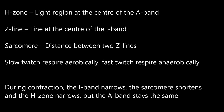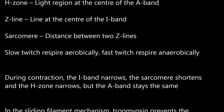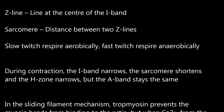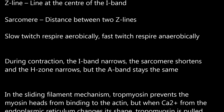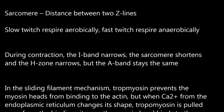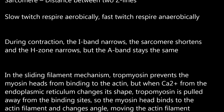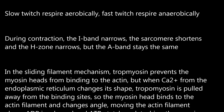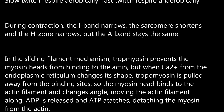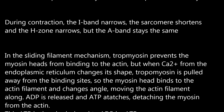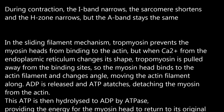H-zone: the light region at the centre of the A-band. Z-line: the line at the centre of the I-band. Sarcomere: the distance between two Z-lines. Slow twitch fibres respire aerobically; fast twitch fibres respire anaerobically. During contraction, the I-band narrows, the sarcomere shortens and the H-zone narrows, but the A-band stays the same.